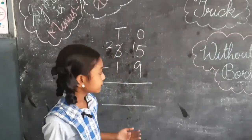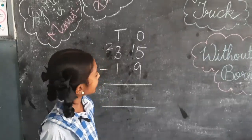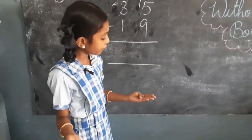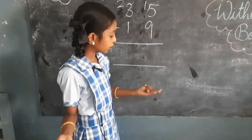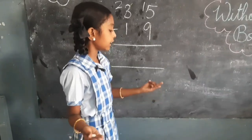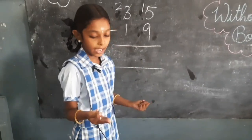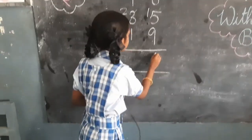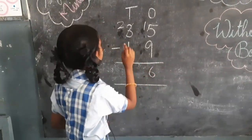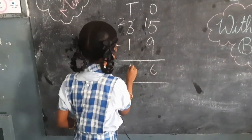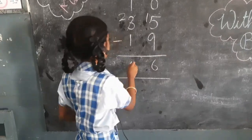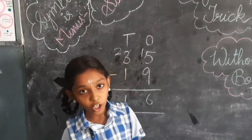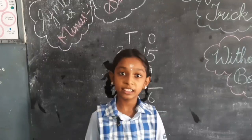Then we have to subtract by telling backward numbers. Hold 10 in your mind and count 9 on your fingers backward from 15: 14, 13, 12, 11, 10, 9, 8, 7, 6 — and our answer is 6. Then 2 minus 1 is 1. So the difference is 16. This is the standard subtraction method, but it is difficult for some of us. So we have one easy trick.